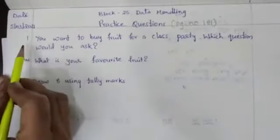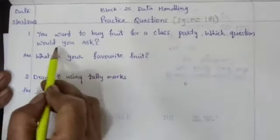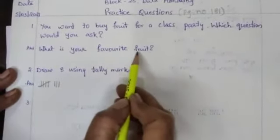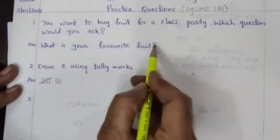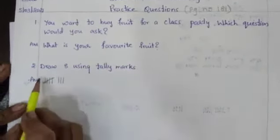Write date. First question: if you want to buy food for a class party, which question would you ask? What is your favorite food? Okay children, write the question mark because you are asking a question.